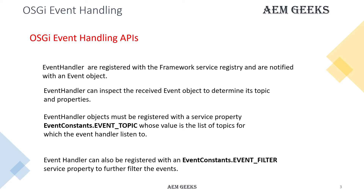These event handlers are registered with the framework and notified with an event object. The event handler can check or inspect that object and get required information. This object is provided by the framework to your handler method and will contain all the required information about the event and about the resources that you need to perform your task.